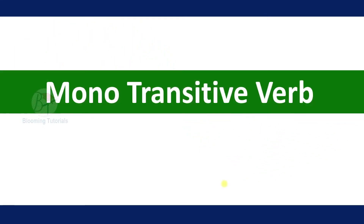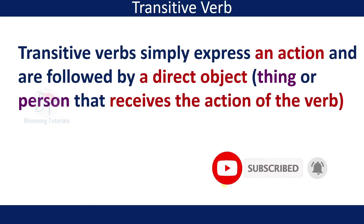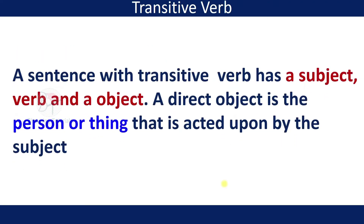Let us start with monotransitive verbs first. Monotransitive verbs simply express an action and are followed by a direct object — the thing or person that receives the action of the verb. A sentence with a transitive verb has a subject, verb, and an object. A direct object is the person or thing that is acted upon by the subject.